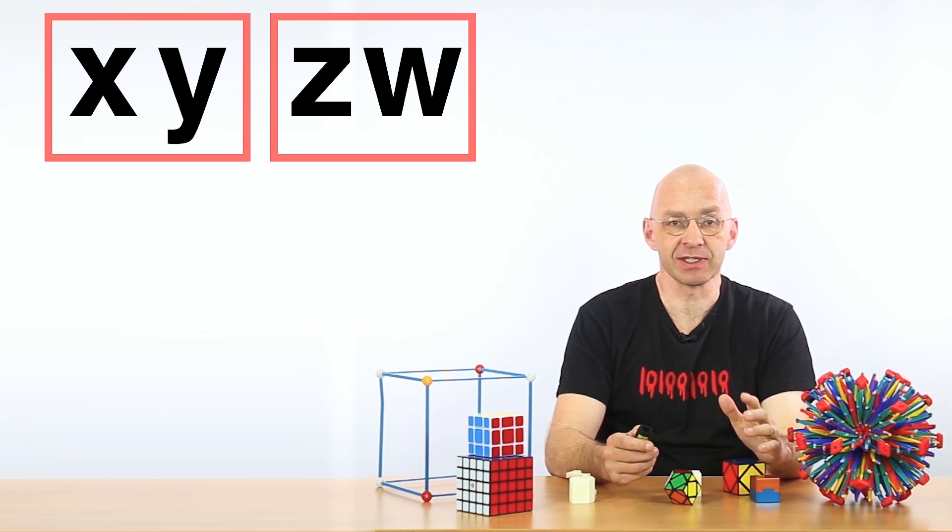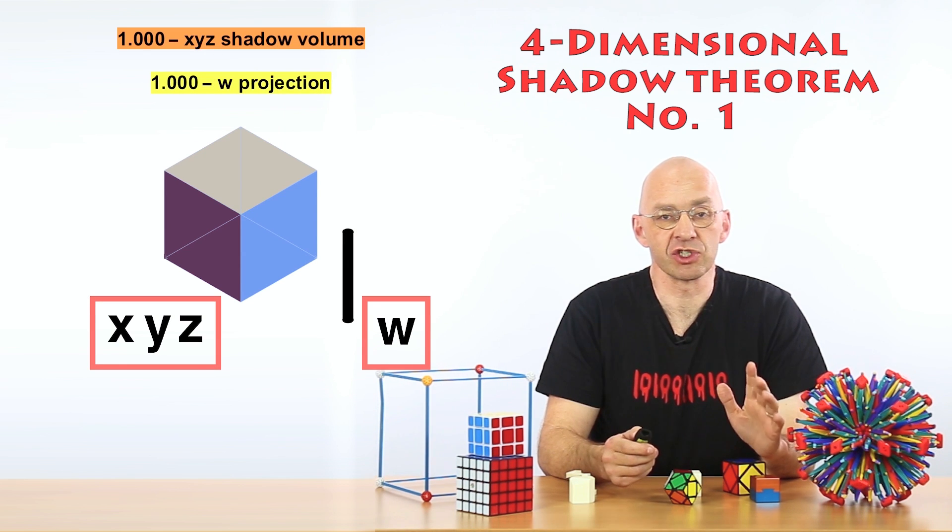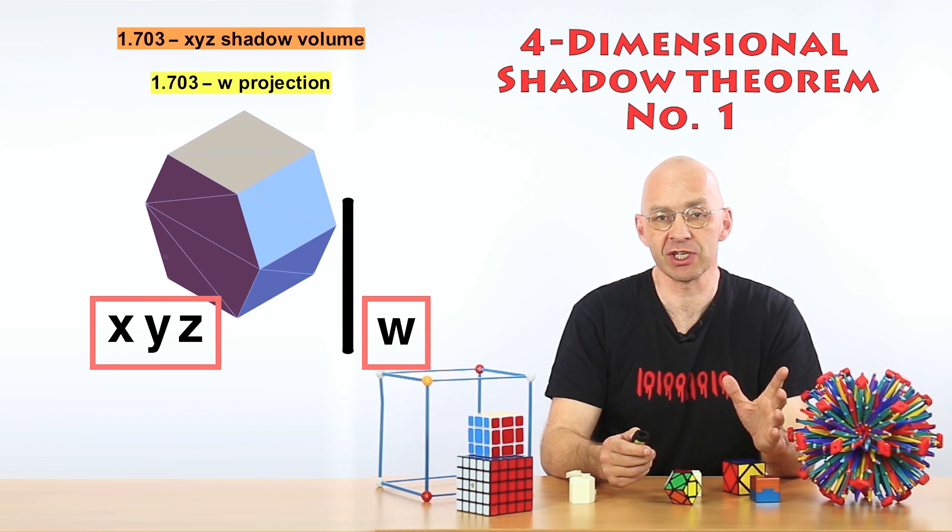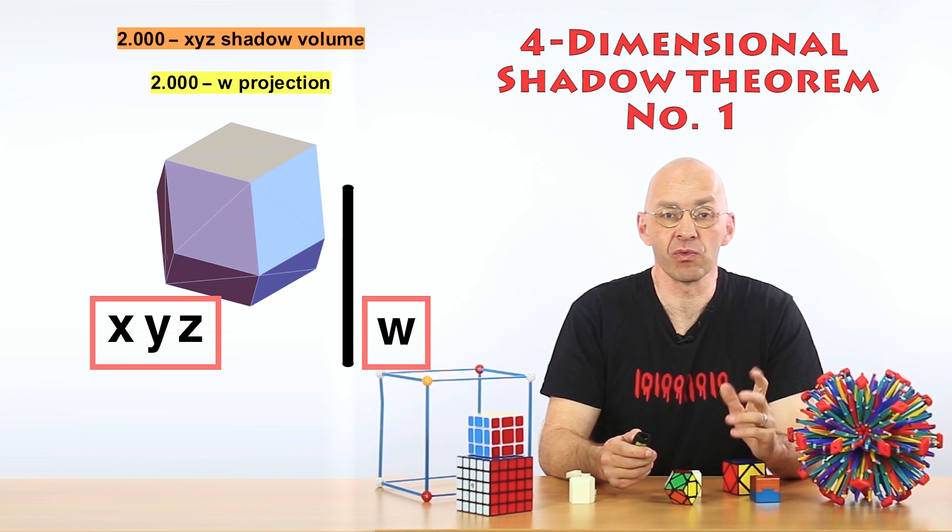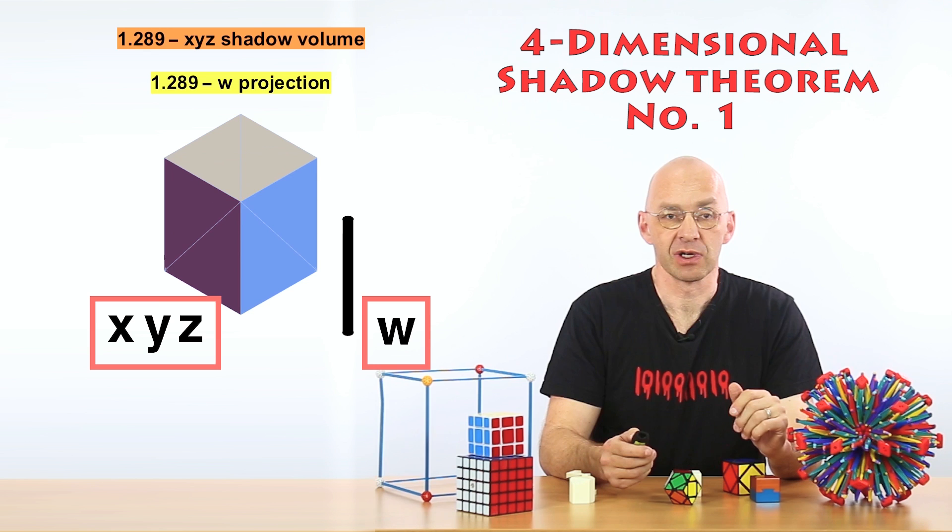The first one is an animation that shows the shadow play of a rotating 4D unit hypercube casting one 3D shadow into x, y, z space, that's our universe, and one 1D shadow on the w-axis. Alright?